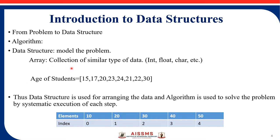An array is a collection of similar types of data. Suppose we have the age of students — this is an array which stores the age of some particular students. The ages are 15, 17, 20, 23, 24, 21, 22, and 30. We cannot store all these values in a single variable. If we declare an integer variable 'a = 15', then 'a' can only store the value 15 — it cannot store 17 up to 30. It cannot store more than one value in a single variable, so to handle this we need to design a data structure.